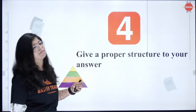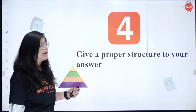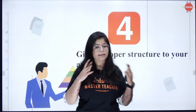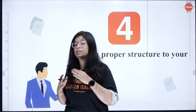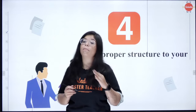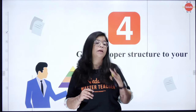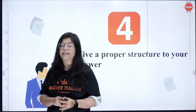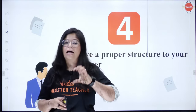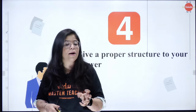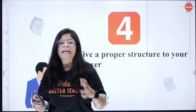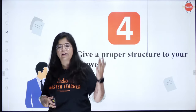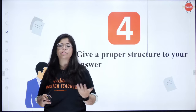Moving on to tip number four: always give a proper structure to your answer. If you look at CBSE English paper answer keys, marks are given for coherence and connectivity. This means your lines should be connected to each other. It shouldn't be the case that you write half the answer for one part here, half the answer below, and in between you're writing the answer for another part. There must be connectivity in your answers — move point by point.